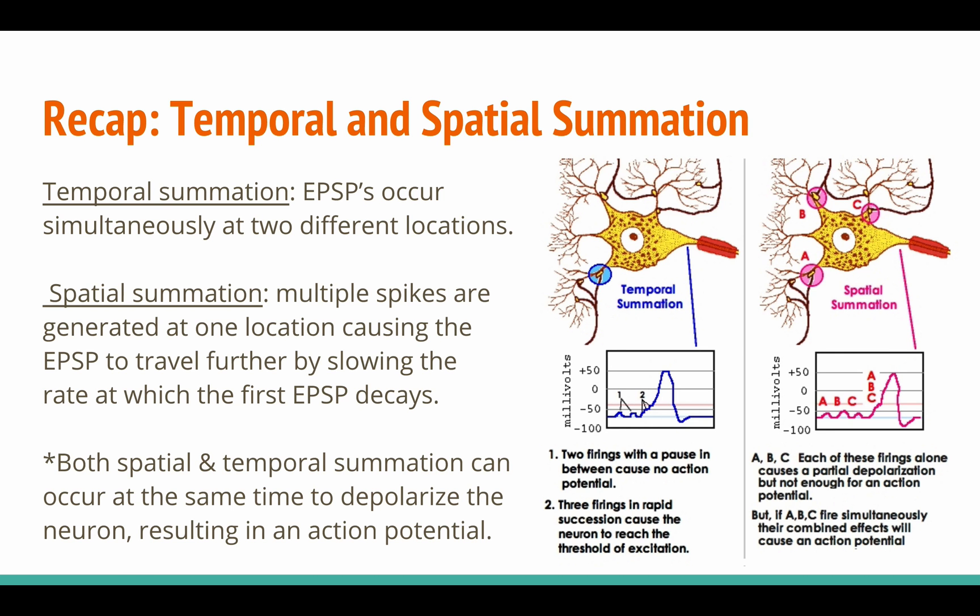To summarize a concept from the last video: a neuron releases neurotransmitters onto the dendrites of another neuron, causing the receiving neuron, or postsynaptic neuron, to change its voltage. Two ways in which this can happen are through temporal summation and spatial summation.